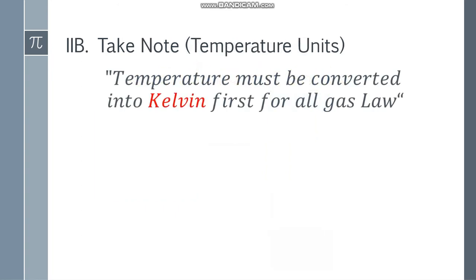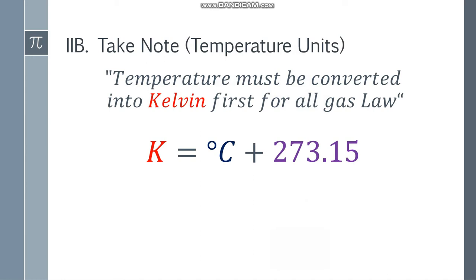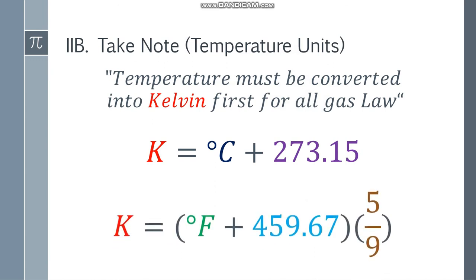Also take note the temperature units. We have Kelvin, Fahrenheit, or Celsius. Temperature must be converted into Kelvin first for all gas law problems. If you don't convert it and you solve directly, you will definitely get a wrong answer. If you have Celsius, just add 273.15. If you have Fahrenheit, add 459.67 and then multiply by 5 over 9.